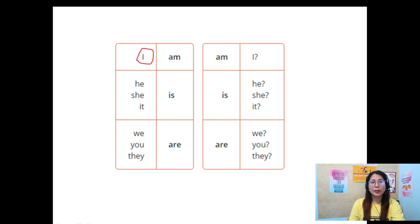In question, change the position so the verb first plus the pronoun or the noun or the subject. I am, am I, he, she, it, is, is he, is she, is it? We, you, they, are, are we, are you, are they?